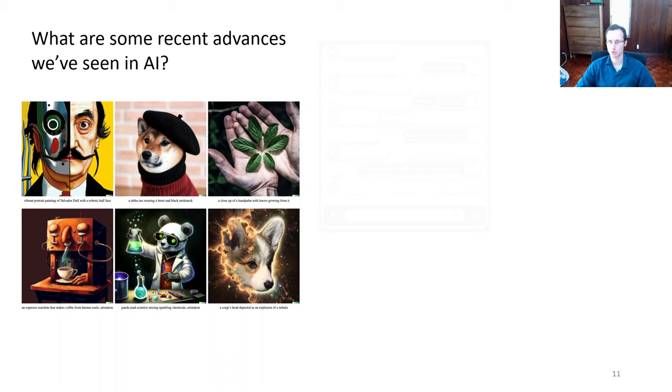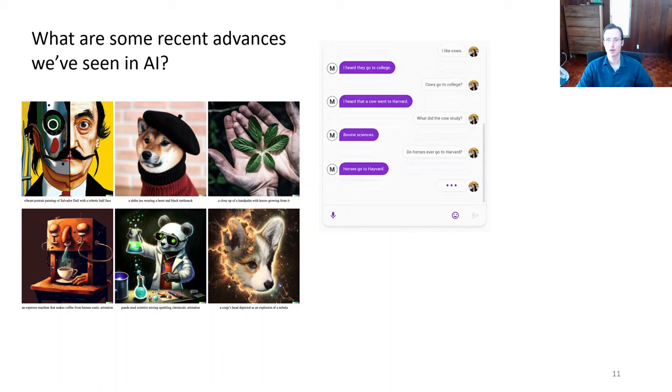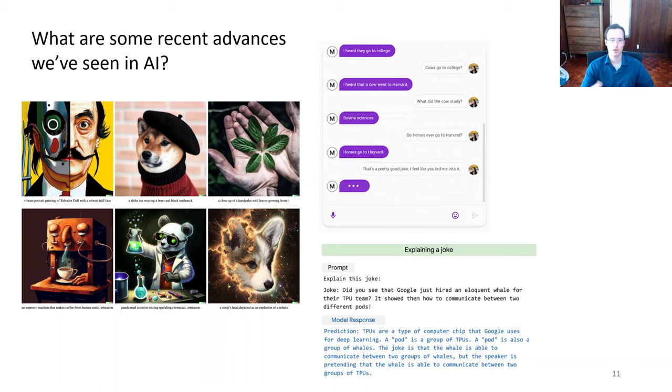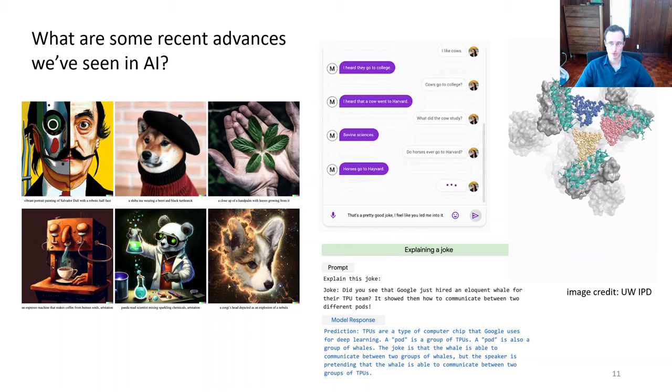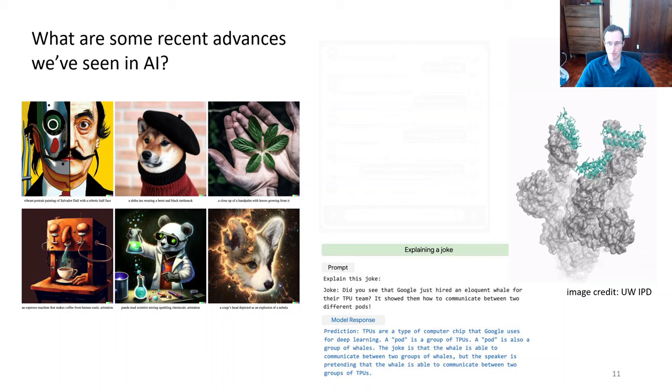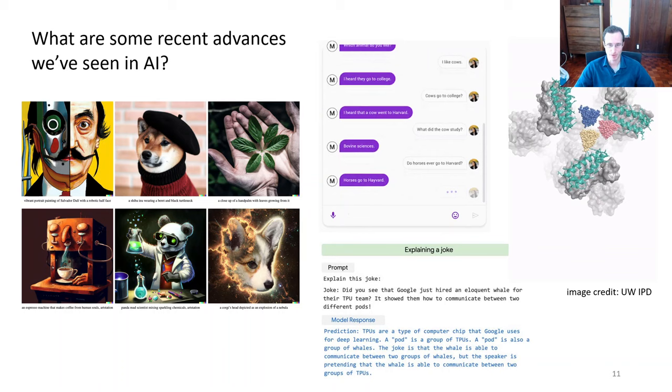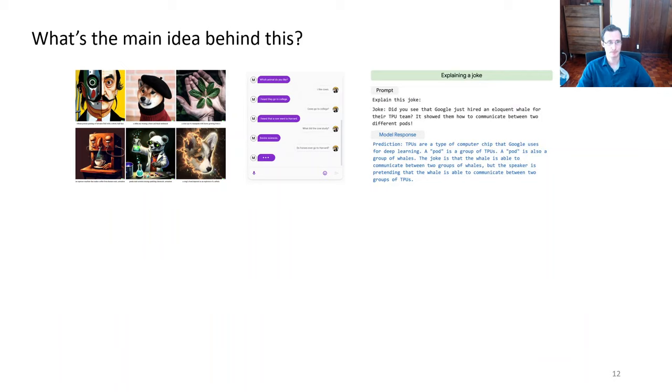We could get language models that can carry out conversations, that can tell you jokes about cows going to study bovine sciences at Harvard. You can get large language models that act as assistants, that can explain jokes, that can even answer complex coding prompts. And even outside of the standard generative modeling applications, we've seen a lot of interesting results, for example, in biological sciences, where you can get generative models that will produce proteins that will bind to certain kinds of viruses. So data-driven AI has really advanced tremendously, and we've seen a lot of advances from image generation to text to all sorts of other areas.